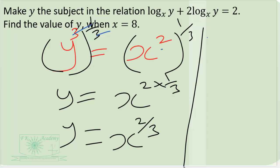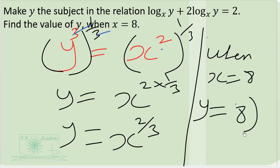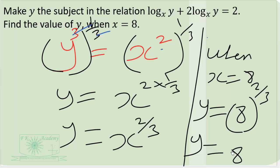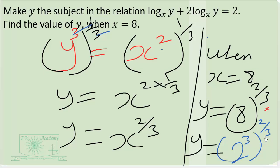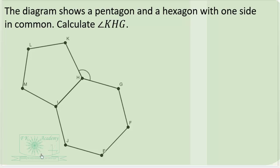When x equals 8, y equals 8 to the power of 2 over 3. Now 8 is the same as 2 cubed, so the exponents multiply: 3 times 2 over 3 simplifies, giving y equals 2 squared, which is 4. So when x equals 8, y equals 4.